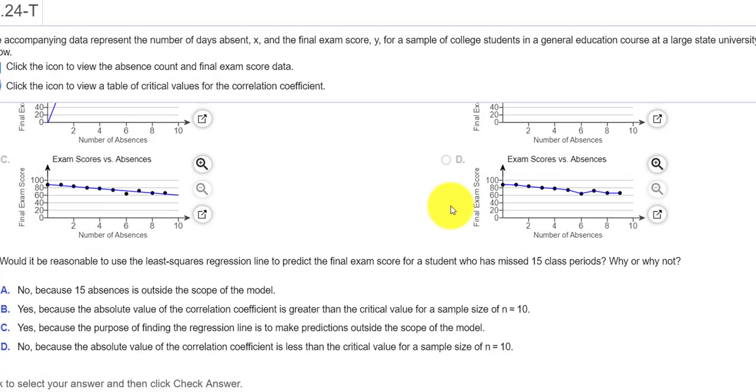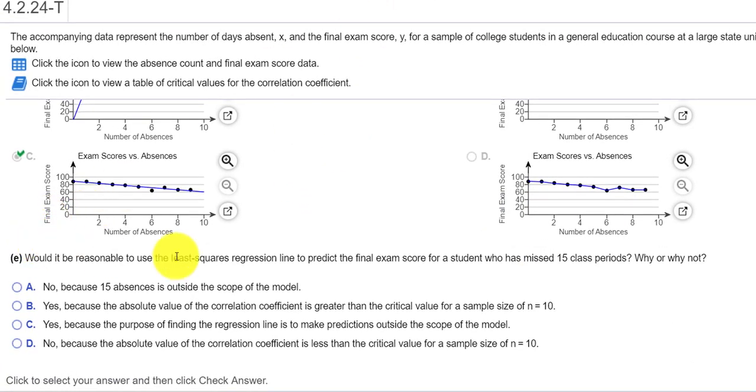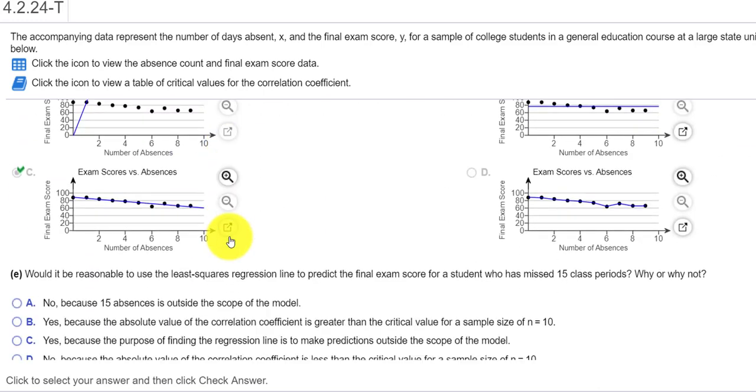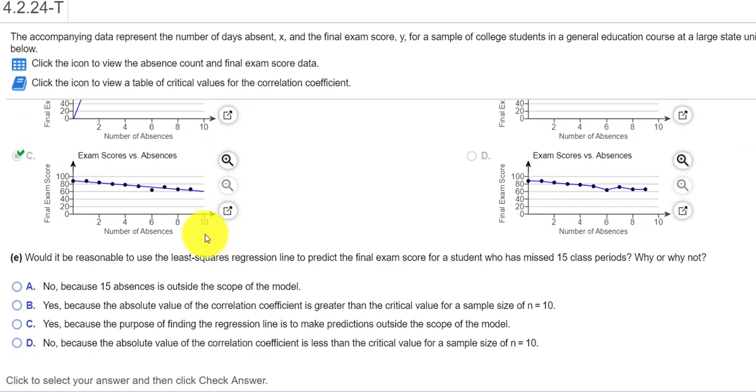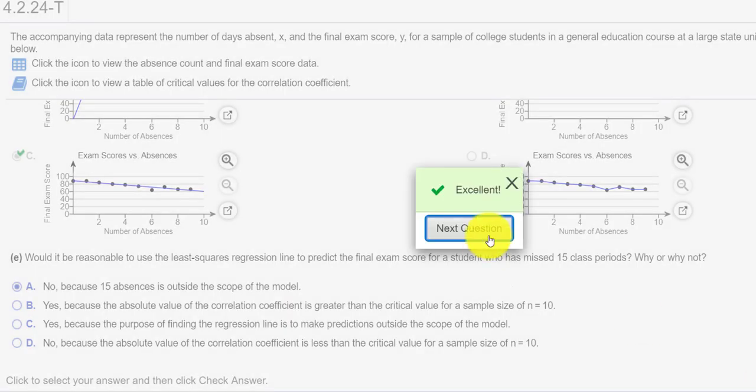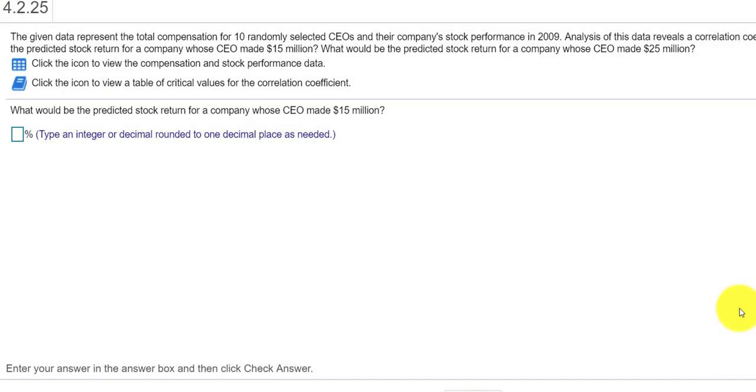I think that's it for this question. Question number nine. Nope, sorry. There's a part E. Would it be reasonable to use the least square regression line to predict the score for a student who missed 15 periods? Well, the answer is no. Because our observed data really only goes out to 10 absences. So anything outside of our observed data would be considered extrapolation. So the further you get away from known data, the less reliable your answer is. So I'm going to say no because 15 absences is outside the scope of the model. Check answer. Done. I hope that helps. Thank you for watching.